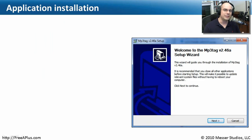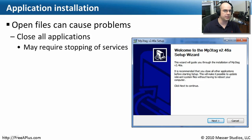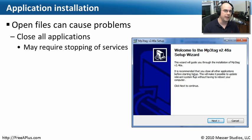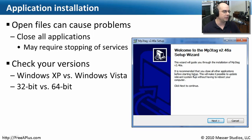There are a number of best practices you can follow when installing applications. A really important one, regardless of what application you're installing, is to try to shut down all other applications running on your computer at that time. You've probably seen this message before: it's recommended you close all other applications before starting setup. Installation programs may be trying to overwrite a file that already exists in the Windows directory or files that may already be in use. You may also have to turn off some services, because you cannot have a program installing over a file that's currently open.